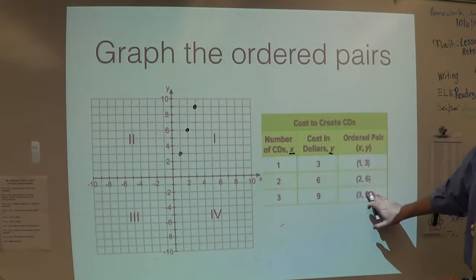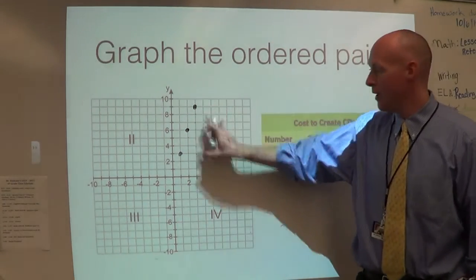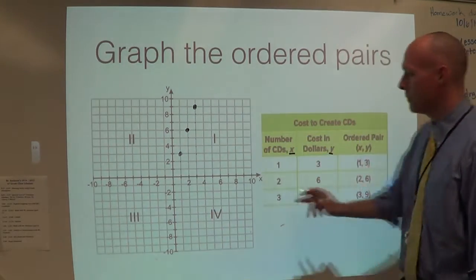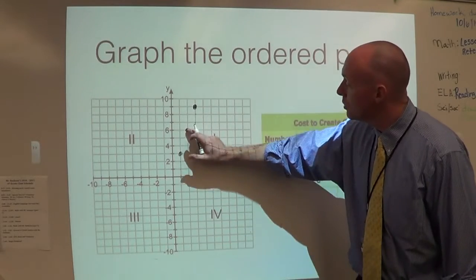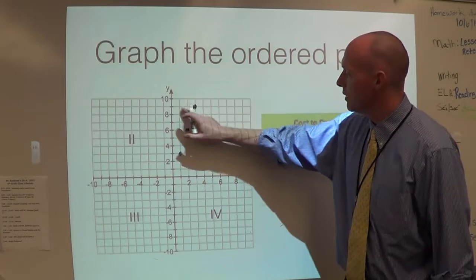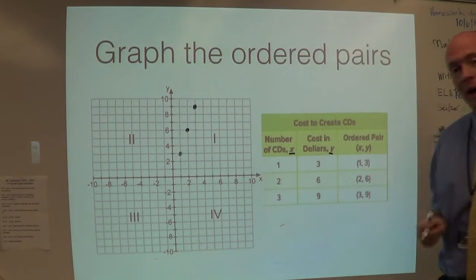We've graphed all our ordered pairs. They're on there. I'll double check. That is one, three. Yep. I have two, six. Yep. And last, I have three, nine. Yep. Perfect. Let's move ahead.